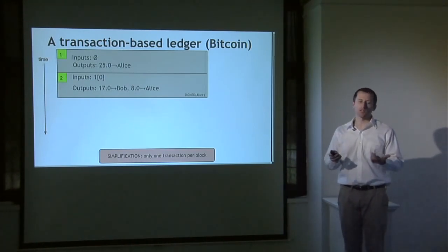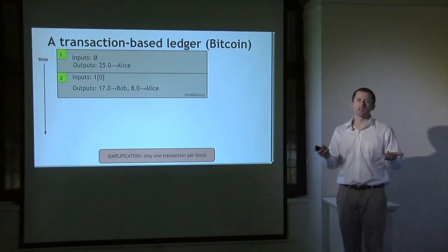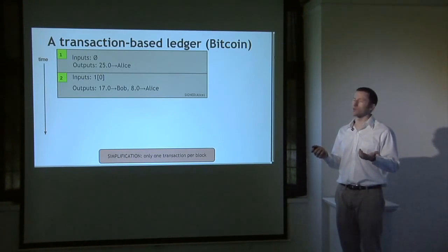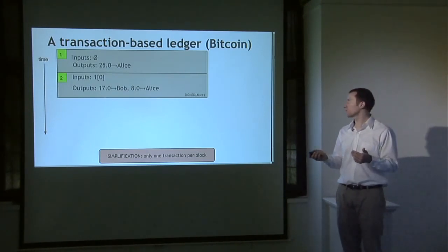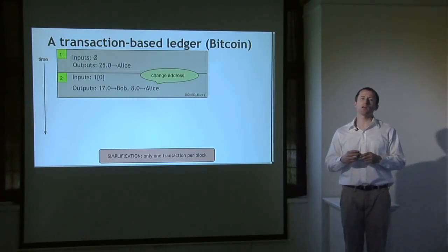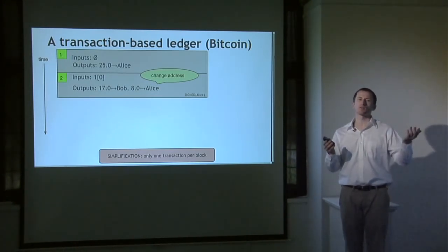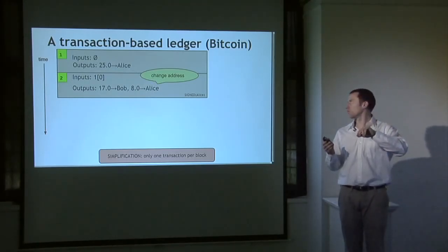This transaction has two outputs: 17 coins to Bob and 8 coins to Alice. The whole thing is signed by Alice to authorize it. You might ask why Alice has to send money to herself — she took 25 coins assigned to her, only wanted to pay 17 to Bob, and must create a new output sending 8 coins back to herself. This is called a change address. The design is that you always completely consume the output of a previous transaction — there's no way to say 'I only need 17 coins from that output.' You consume all 25, and send the remainder back to yourself as change.